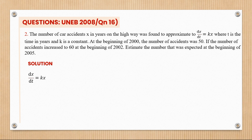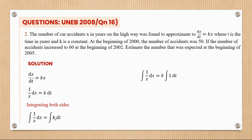Separating variables: (1/x)dx = k dt. Integrating both sides gives ln x = kt + c, which is equation one. To find c, we use the initial condition: at t = 0 years (beginning of 2000), x = 50. Substituting: ln 50 = k(0) + c, so c = ln 50. This is equation two.